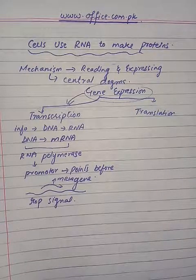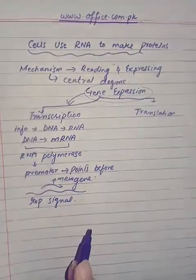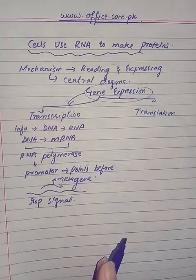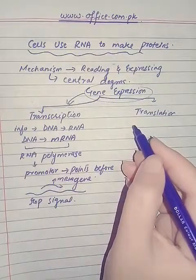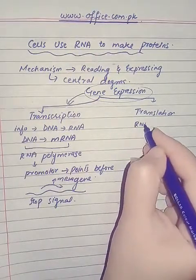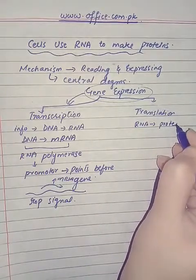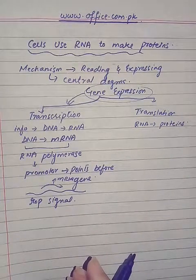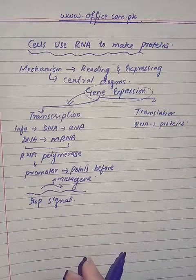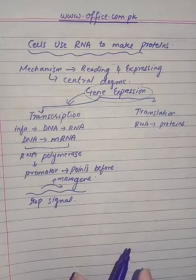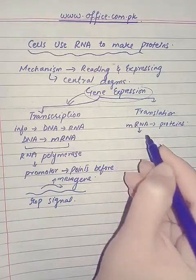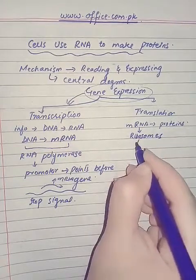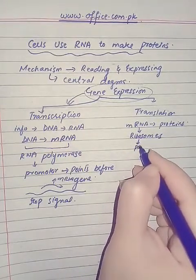The second step is translation — the transfer of information from RNA to proteins. This occurs when the information contained in the messenger RNA is used to direct the synthesis of polypeptides. The messenger RNA carries this information to the ribosomes, and the ribosomes collect amino acids and form polypeptides.